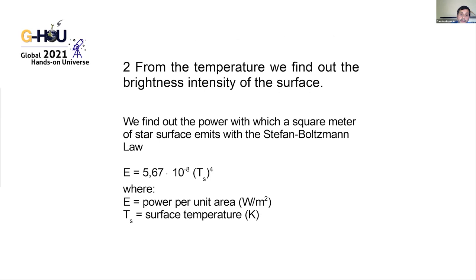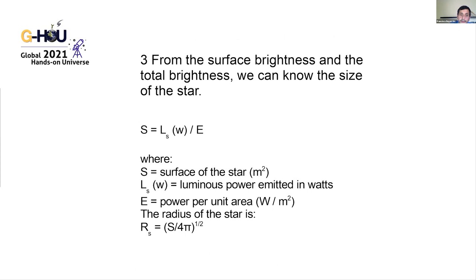The second step: from the temperature we calculate the surface brightness intensity of the star. Higher temperature means higher intensity — intensity is proportional to the fourth power of the temperature. Also, if we know the surface brightness and the total luminosity, we can determine the size of the star. A star with high luminosity but low surface brightness will have a very large size.